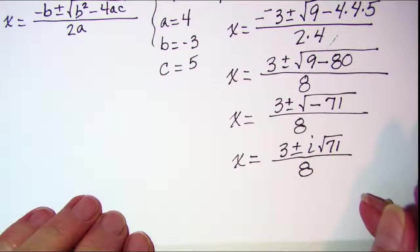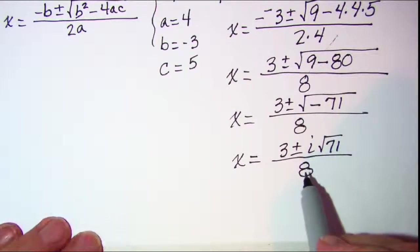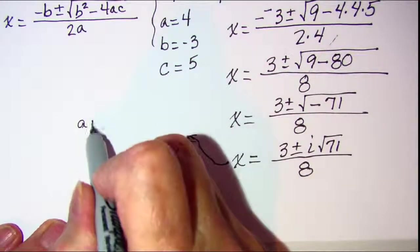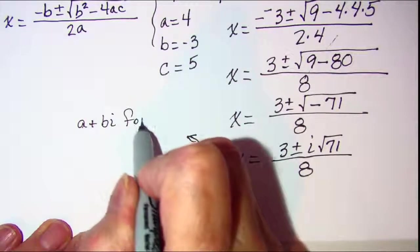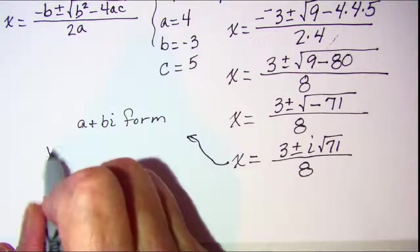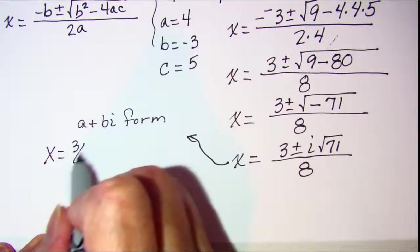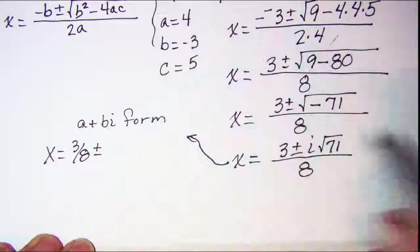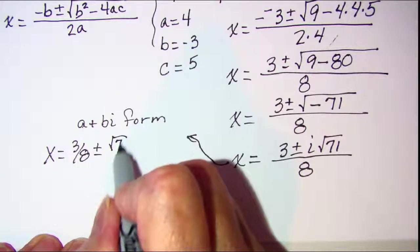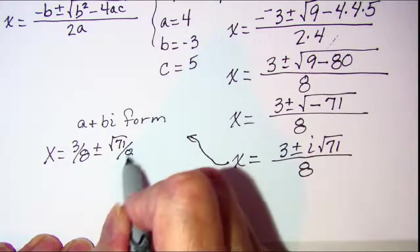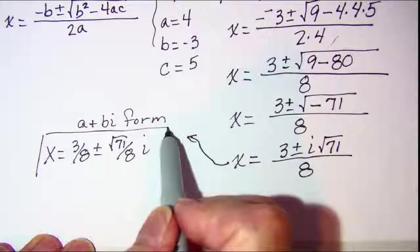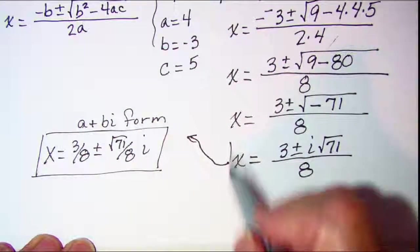Now if you're asked to write complex numbers in a plus bi form, you would write this as 3 eighths plus or minus root 71 over 8 times i. Either of these are fine.